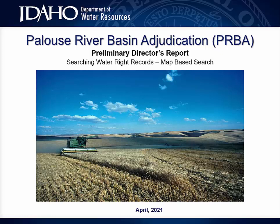This video was created in connection with the mailing of the Preliminary Director's Report for the Palouse River Basin Adjudication. As a result, the demonstration discusses how to search for adjudication claim and recommendation records in order to find information that can be useful in reviewing a preliminary recommendation. Much of the information shown here is also applicable to non-adjudication records.